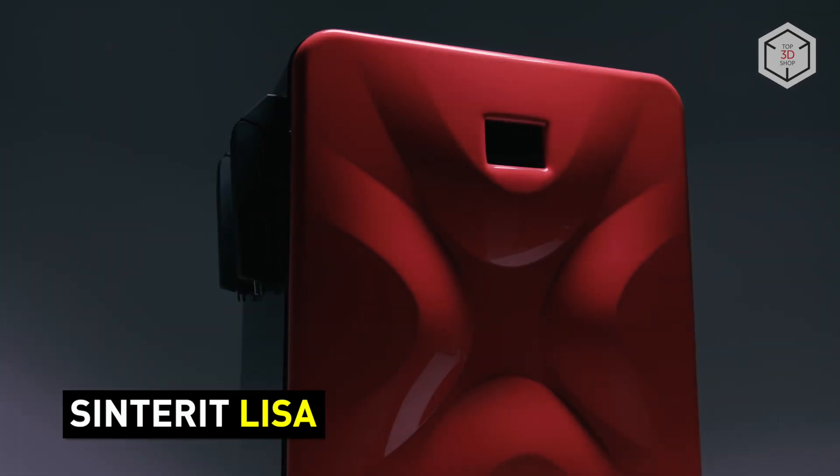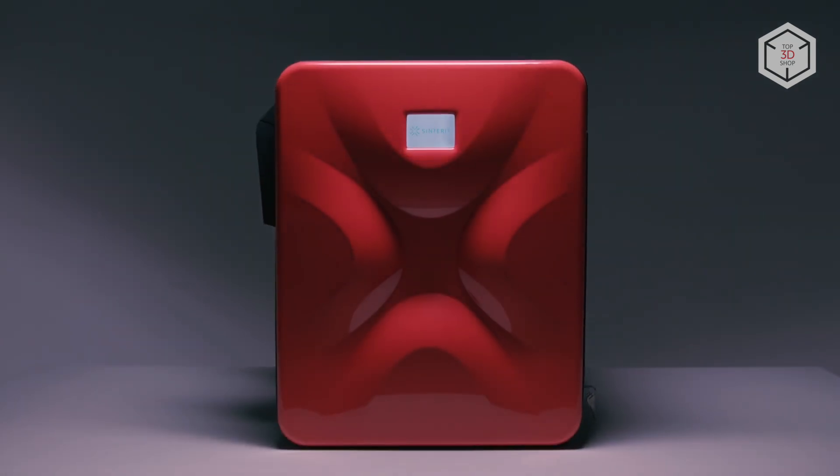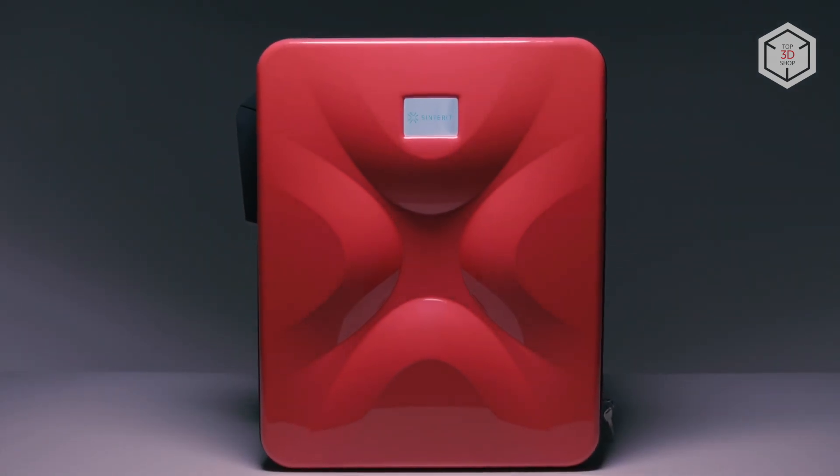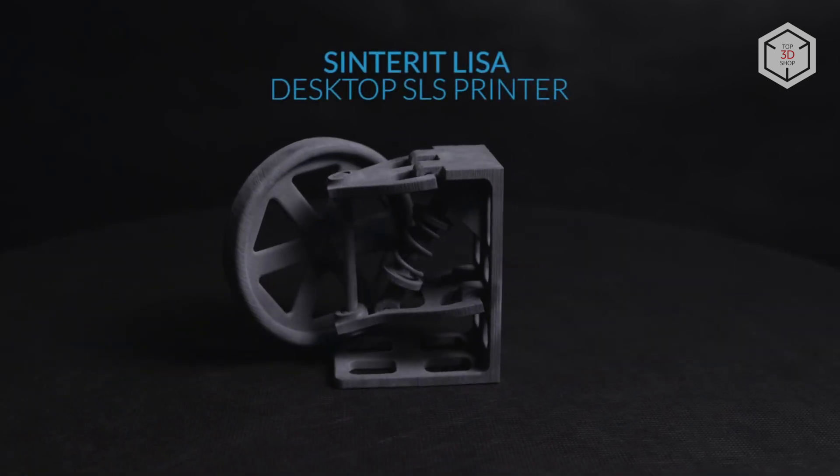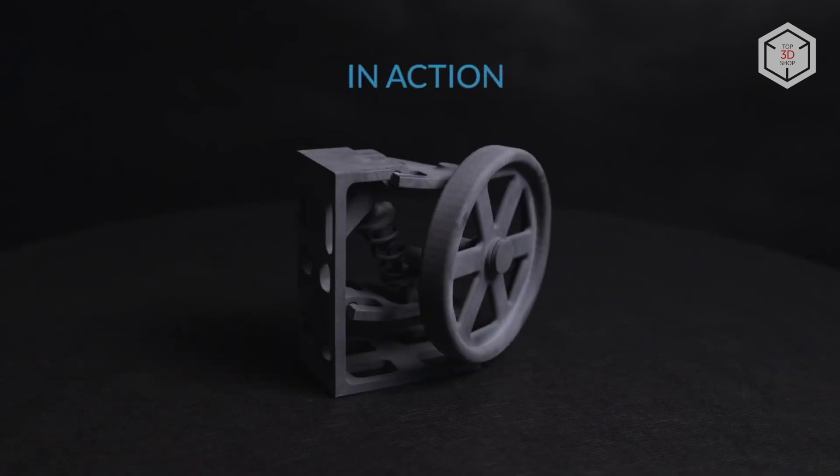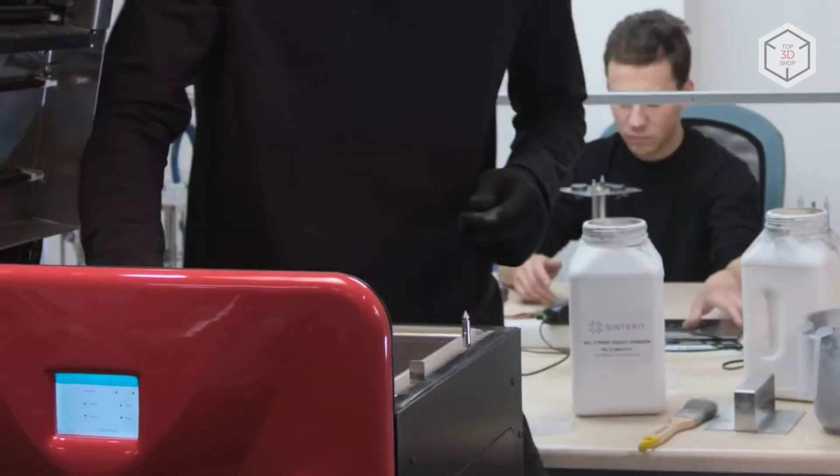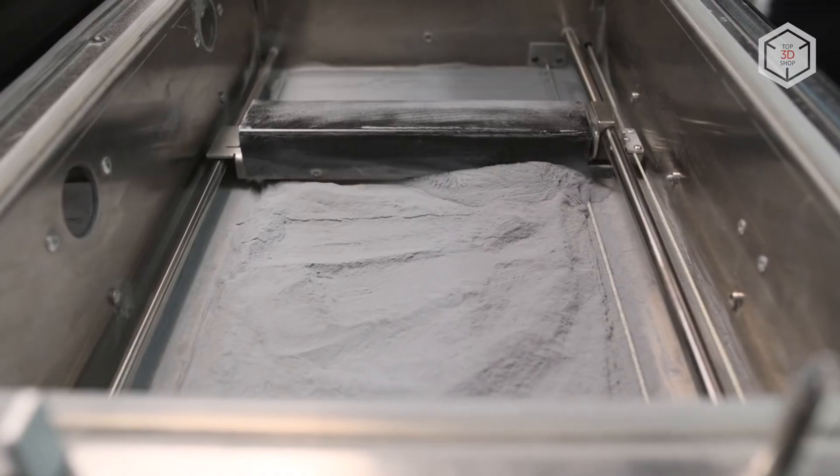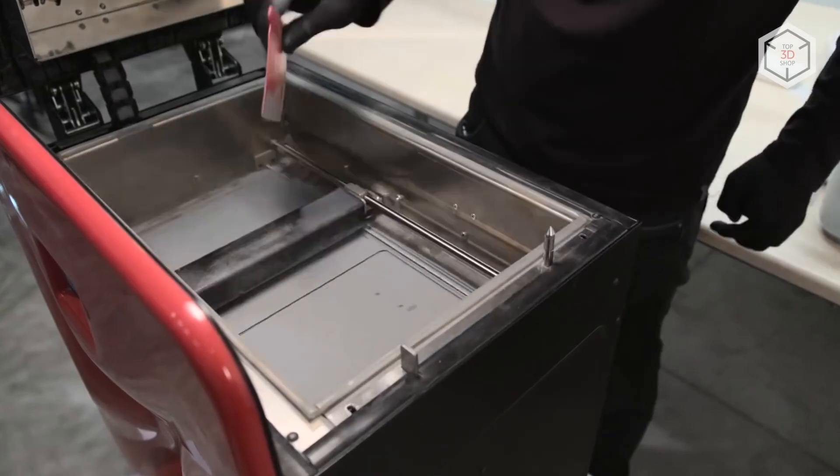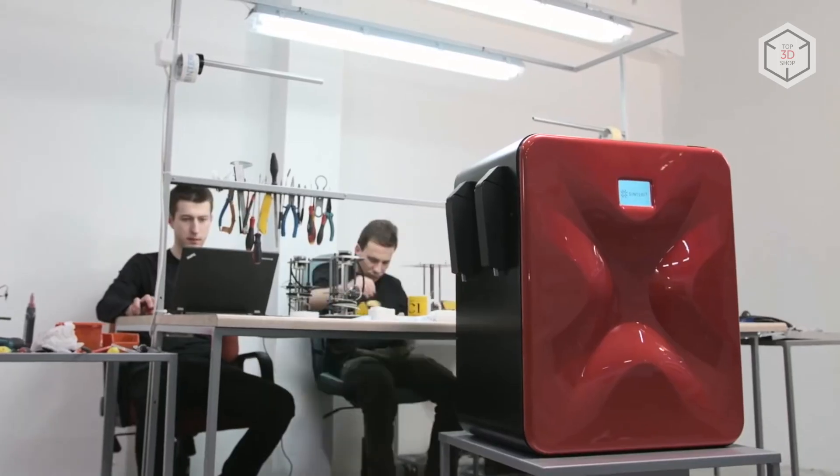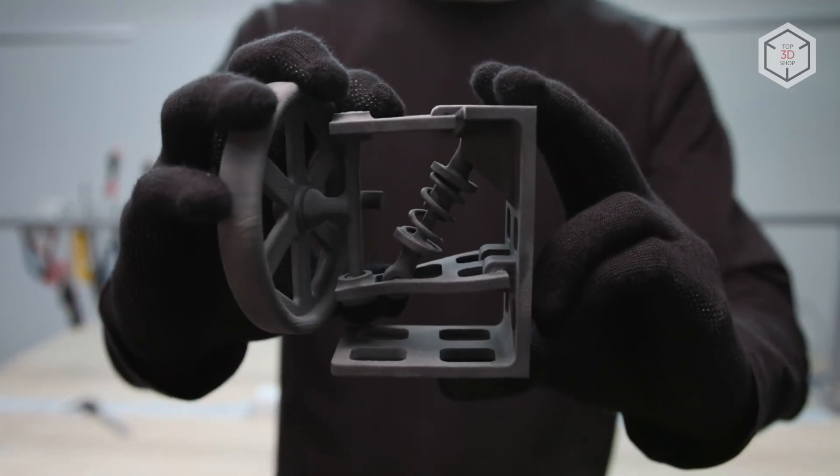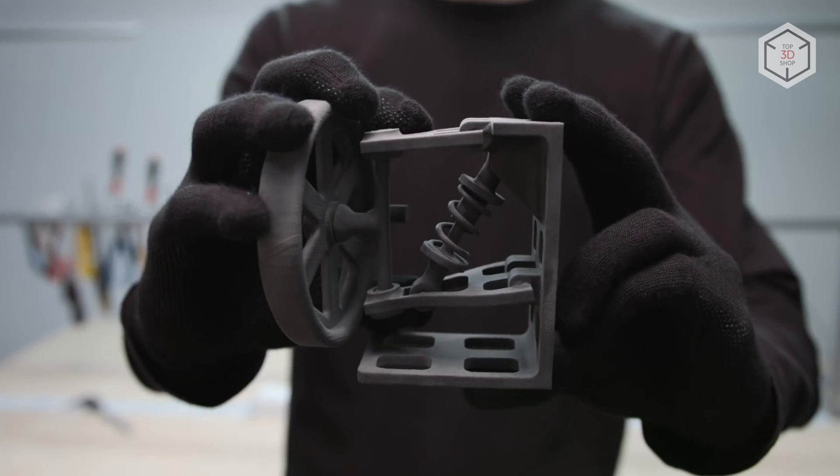The Sinterit Lisa is one of the first and the most noticeable really compact SLS 3D printers in the market. Its dimensions are 650 x 550 x 400 mm, it can work with PA-12 and TPE powders, and is compatible with third-party manufacturers' materials. The Lisa produces highly detailed models with a minimum layer height of 75 microns, while its maximum print volume is 110 x 160 x 145 mm. A 4-inch touchscreen can be used to operate the device during the entire printing process, and the built-in camera allows watching the progress on screen. The Sinterit Lisa offers the benefits of SLS 3D printing technology at an incredibly affordable price for an SLS-based printer.